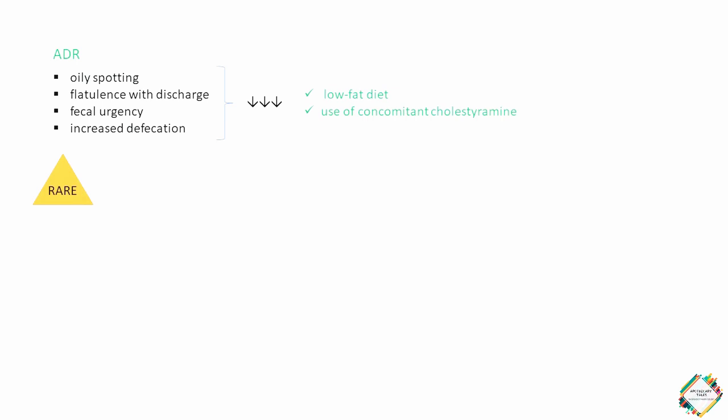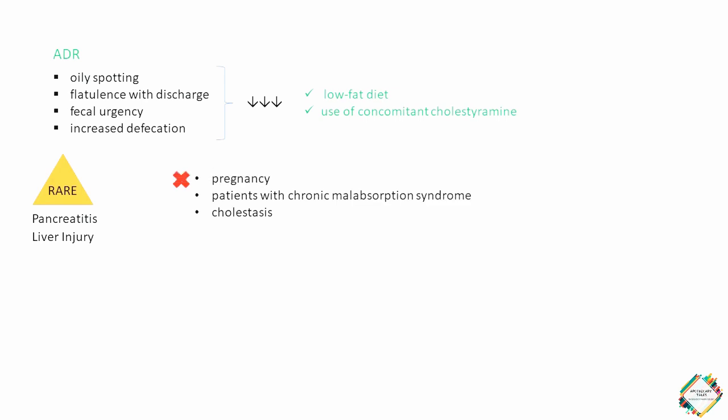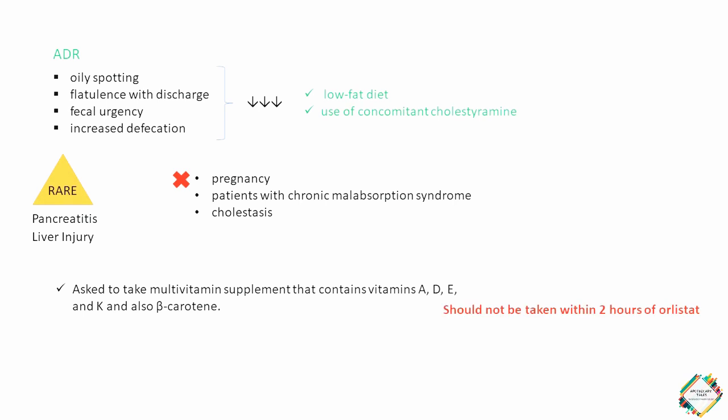Very rarely we can observe pancreatitis and liver injury with this drug. Orlistat is contraindicated in pregnancy and in patients with chronic malabsorption syndrome or cholestasis. The drug also interferes with the absorption of fat-soluble vitamins and beta carotene. Therefore, patients are advised to take a multivitamin supplement containing vitamins A, D, E, and K, and also beta carotene. The vitamin supplement should not be taken within 2 hours of orlistat.